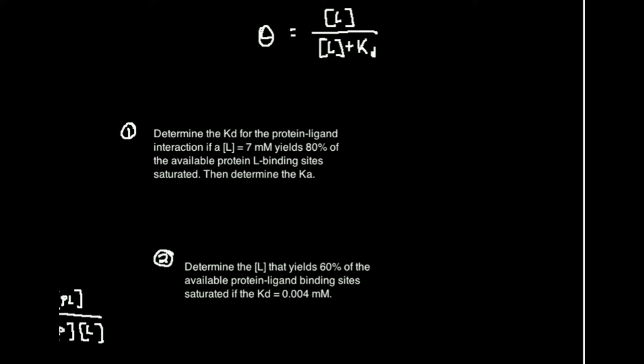Suffice it to say, in one of the other videos we derived this formula, which says that theta, the percentage of all available protein binding sites occupied by the ligand, is equal to the ligand concentration divided by the sum of the ligand concentration and the dissociation constant. In the last video we knew the ligand concentration and theta, and we determined Kd.